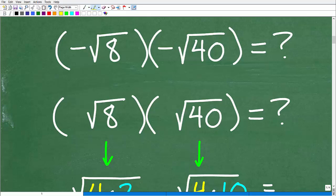The first thing we need to recognize is that negative square root of 8 times negative square root of 40, these are two numbers. This is a number. Don't let the square root part bother you. This is a negative number, and we're multiplying it by a negative number.